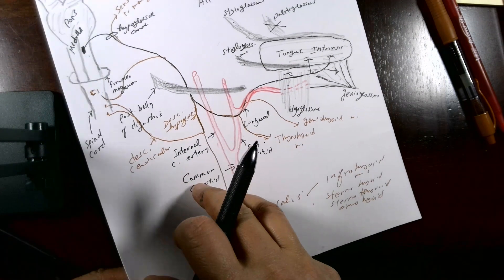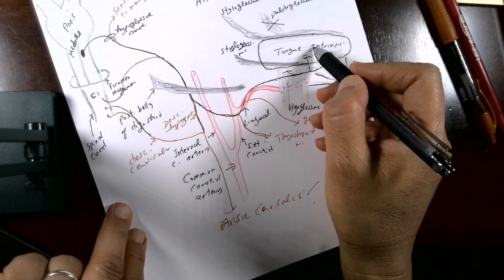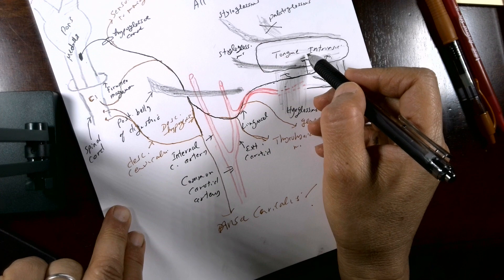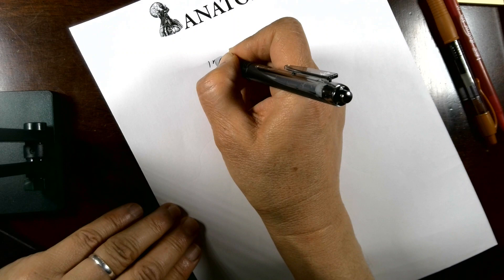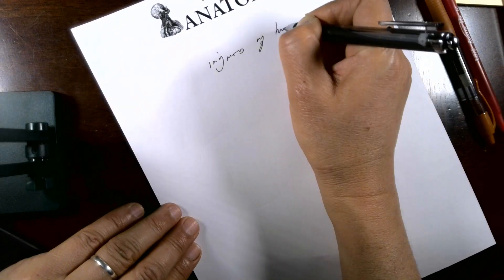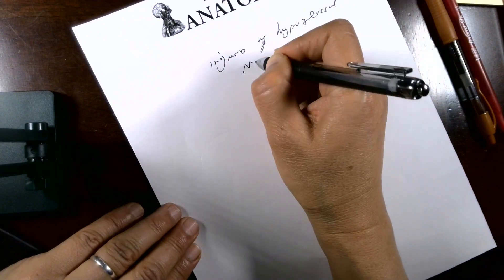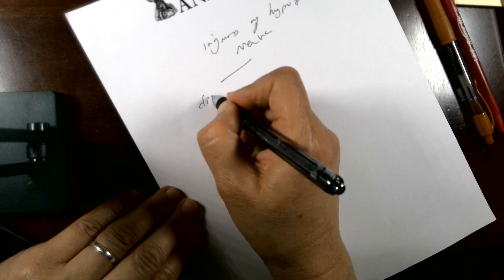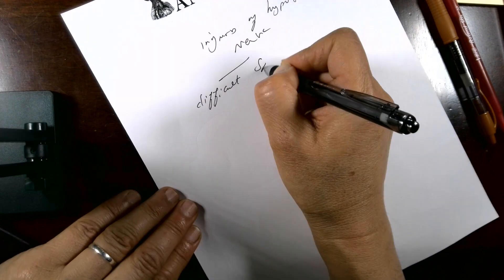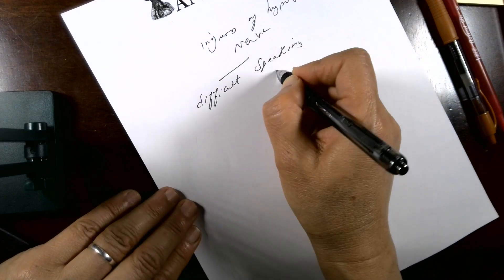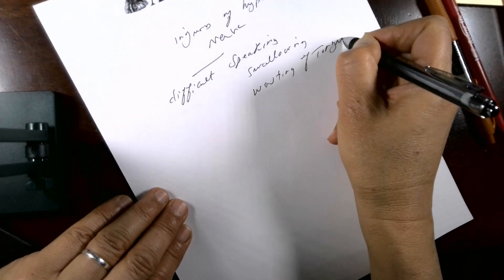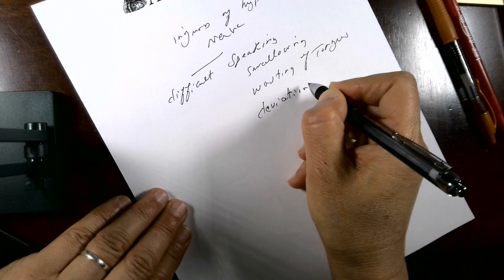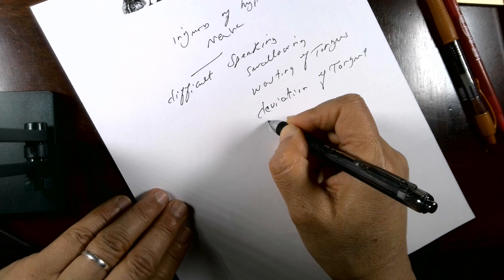To test the intrinsic muscles of the tongue, ask your patient to say 'ah' or 'ta' — this tests the fine movement of the tongue. In summary, injury of the hypoglossal nerve leads to difficulty speaking, difficulty swallowing, wasting of the tongue on the same side, and deviation of the tongue to the same side of injury.